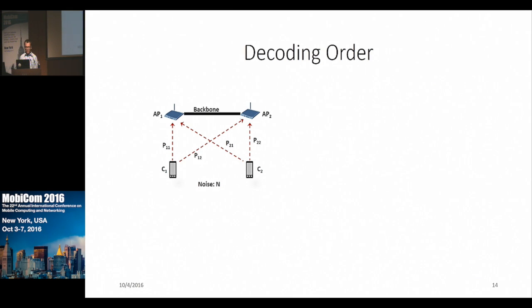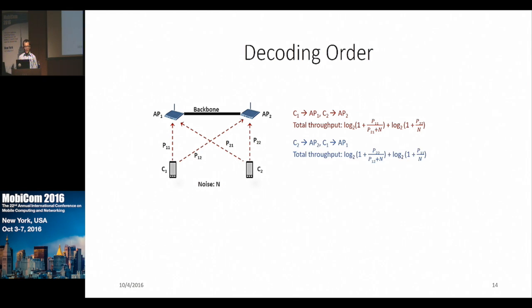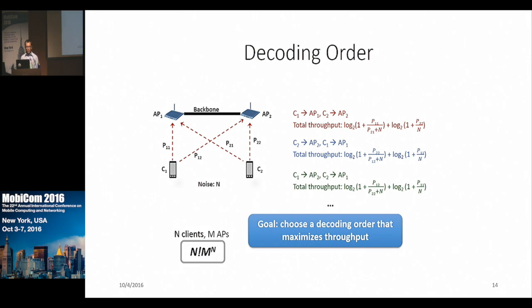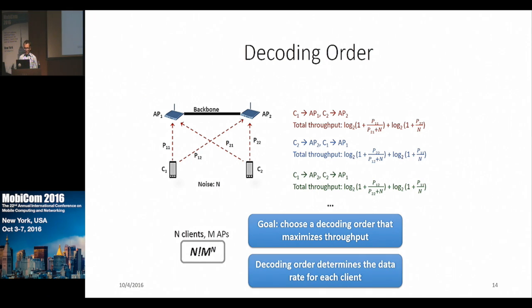To understand the decoding order problem, consider this 2x2 network example. I can decode client 1 at AP1 first, then client 2 at AP2, and compute total throughput using Shannon's capacity formula — or decode client 2 at AP2 first, then client 1 at AP1. There are many such combinations. For n clients, there are n! choices of decoding order, and for each choice with m APs, there are m^n different ways of assigning decoding locations. So for n clients and n APs, there are n! × m^n different decoding orders — which is huge. The goal is to find the decoding order that maximizes total throughput, and once the decoding order is determined, the data rate for each client follows.